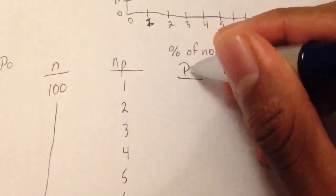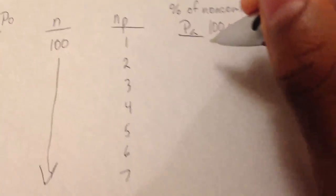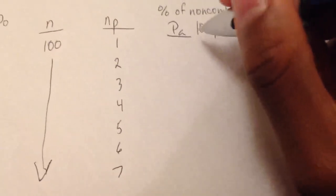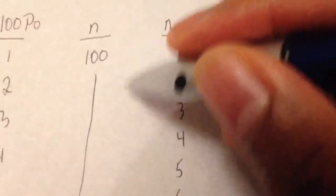And then you have a probability of acceptance. Your probability of acceptance is based off of your acceptance number and your sample size.